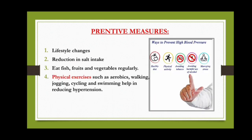Preventive measures — Lifestyle changes: Lifestyle changes are important for both the treatment and prevention of high blood pressure. Measures such as reduction in salt intake to about 9 to 12 grams a day is recommended. It is advised to eat fish, fruits, and vegetables regularly. Daily physical exercise such as aerobics, walking, jogging, cycling, and swimming help in reducing hypertension.